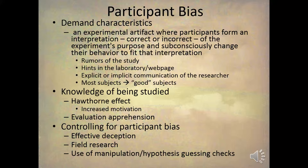Another thing that can cause participant bias is knowledge that they're being studied. One way that can happen is the Hawthorne effect — knowing that you're being studied by a researcher increases your motivation and you do better on certain tasks. Or the other side of the coin is evaluation apprehension — knowing that you're being studied by a researcher makes you nervous and you make mistakes. The way to control for these participant biases is by using deceptive research: if the subject is not aware of what the study is about because they're being deceived, they can't form any impression. Also, field research — doing the experiment in a natural setting where subjects don't know they're in an experiment at all — can prevent these participant biases.